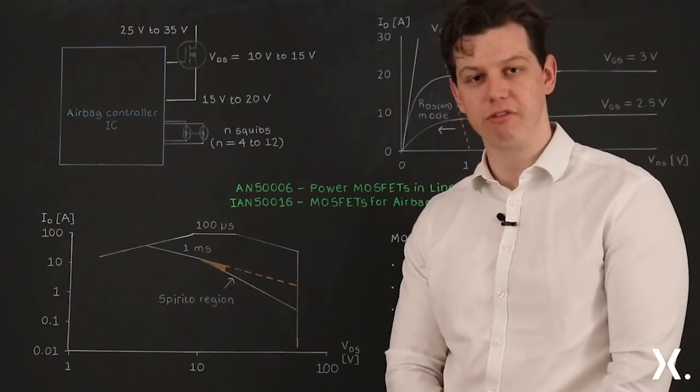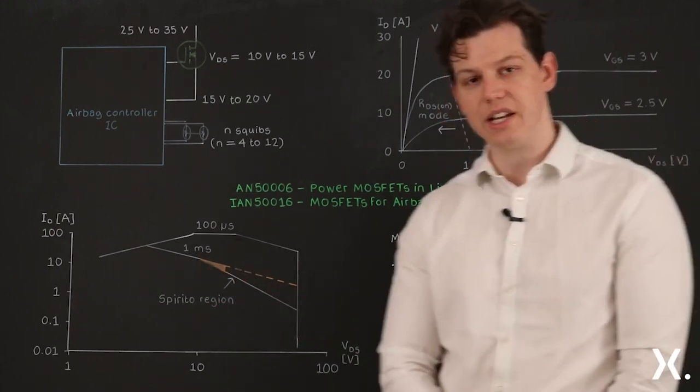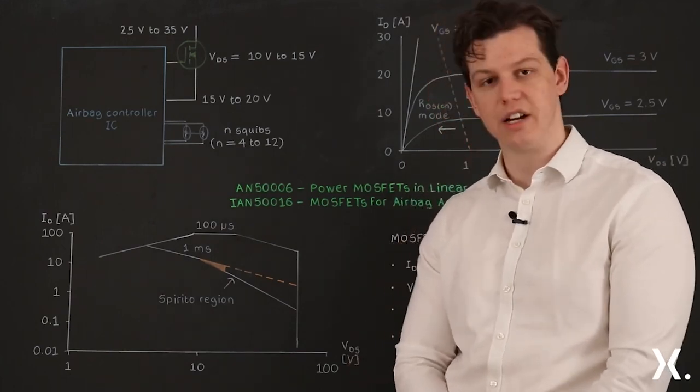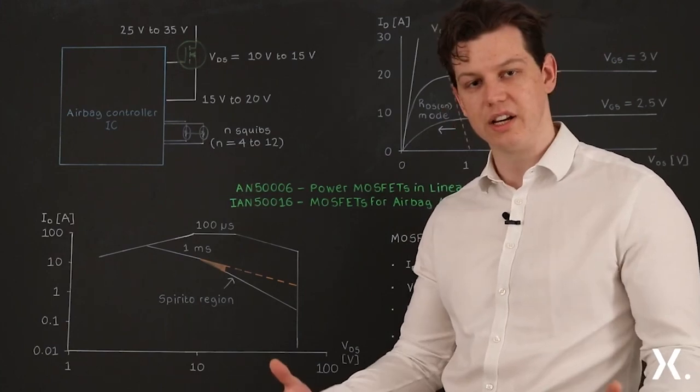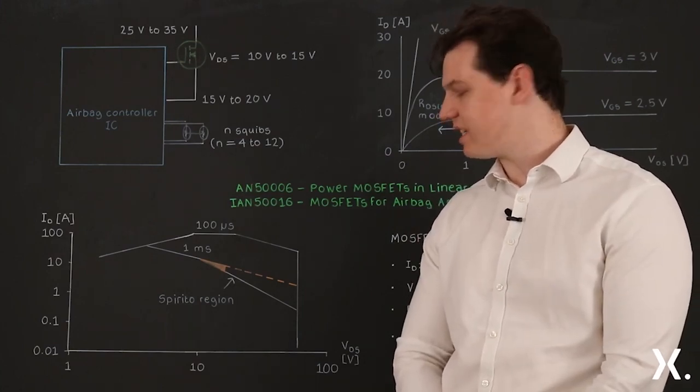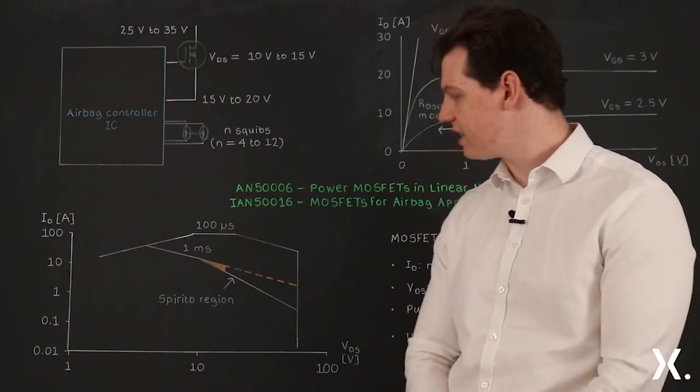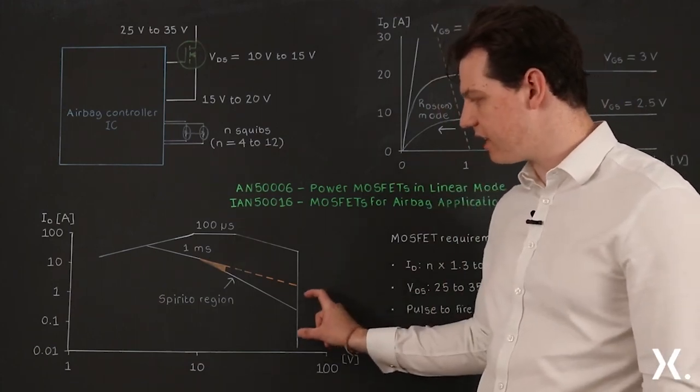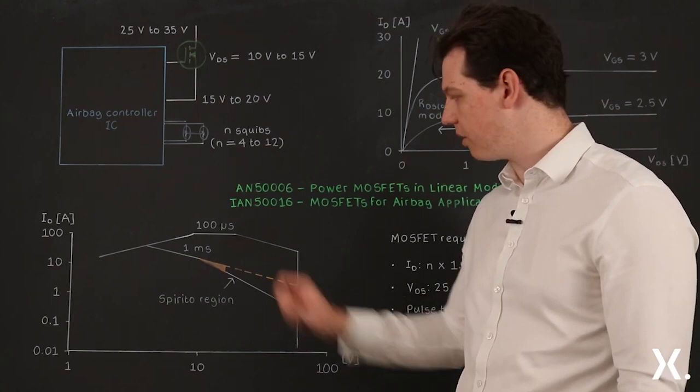This is essentially where cells in the silicon die that are conducting get hotter and conduct even more. Essentially it's a thermal runaway effect of the MOSFET and it results in the safe operating area getting even smaller for longer pulses of current.